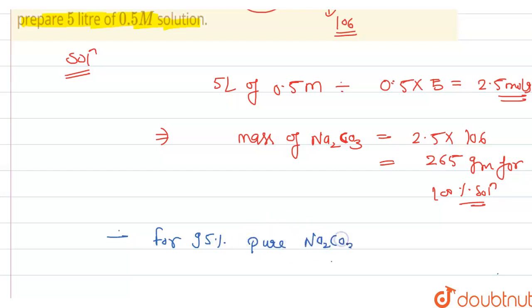For 95% pure Na2CO3, it will be 265 into 0.95, which is nothing but around 251 grams.